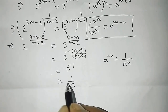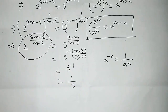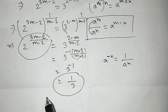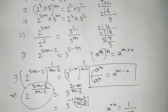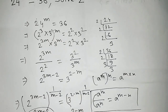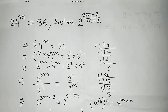So our answer is complete — the value is 3 to the power minus 1, which equals 1/3. If you like this process and this trick, please support me and subscribe to my channel. Thank you, bye bye.